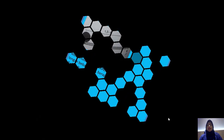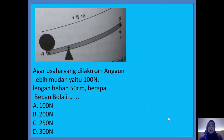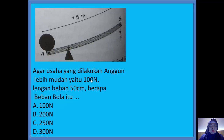Jika ada soal yang seperti ini — masih tuas lagi. Ini ada beban A, W berat, ini titik tumpuh, ini kuasa. Panjang dari galah atau tuas adalah 1,5 meter. Agar usaha yang dilakukan Anggun lebih mudah, yaitu kuasa 100 Newton, dengan lengan beban 50 cm, berapa beban bola itu? Ini opsi pilihannya.